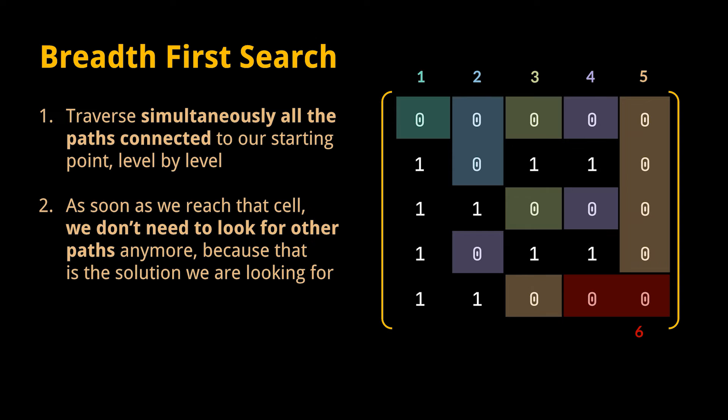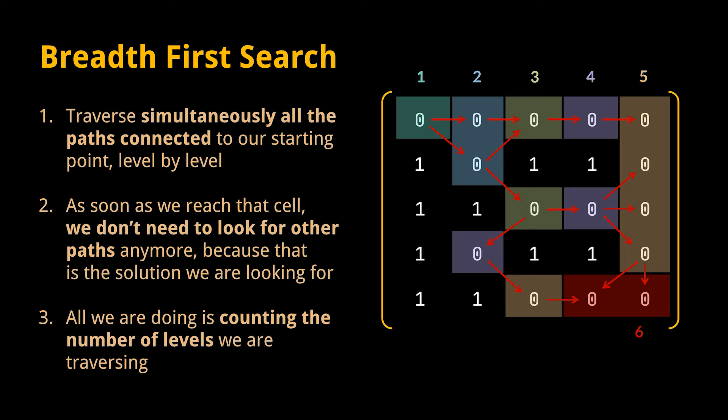You see, if the current level contains a zero, then we can hop to the following one. All we need to do is basically count the number of levels we are traversing before reaching the target cell. So in this example, BFS allowed us to traverse all the paths simultaneously, making it advantageous to us over DFS.